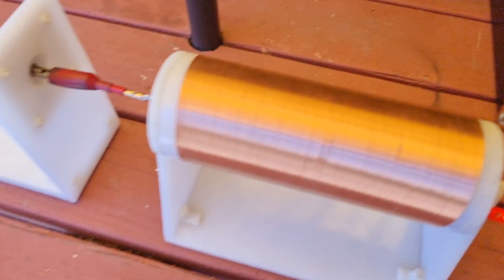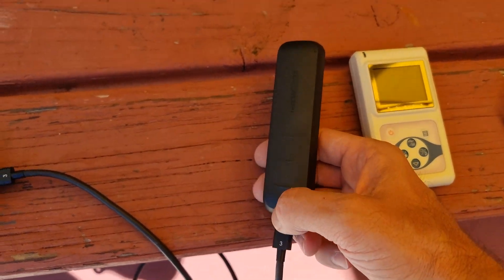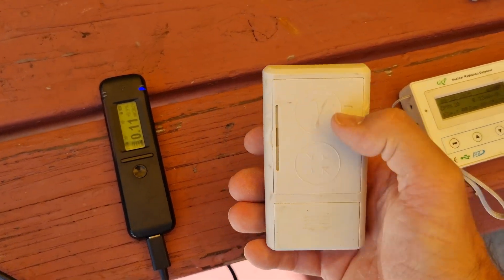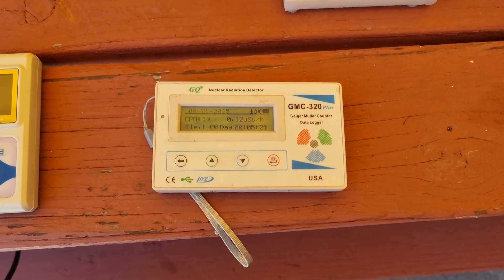We have a selection of detectors here. We're going to try and map the emissions. This is a RadiaCode, this is a RadiaScan with the gamma plate on there, and then we have a GMC-320 here.